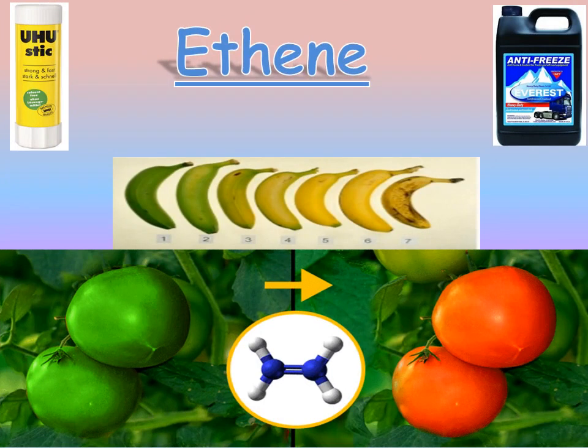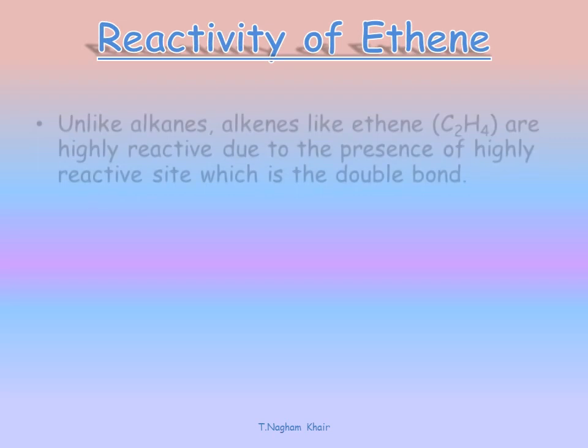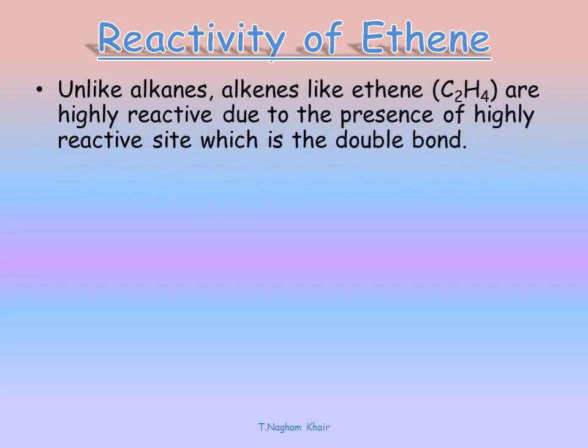In the addition reaction, we will talk about the reactions of ethene. Ethene is present as a gaseous hormone in some fruits and vegetables in order to ripen them. Now, the reactivity of ethene — unlike alkanes, alkenes like ethene are highly reactive due to the presence of the double bond. Alkenes undergo addition reactions because of the presence of a double bond.